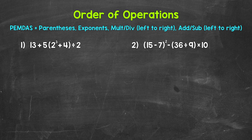So let's go through the order of operations. Are there any parentheses? Yes, so we start there. We need to do anything inside of parentheses. We have 2 cubed plus 4, so we do exponents before addition. Let's do 2 cubed first. 2 cubed means 2 times 2 times 2. 2 times 2 is 4, times 2 is 8. So 2 cubed is 8.